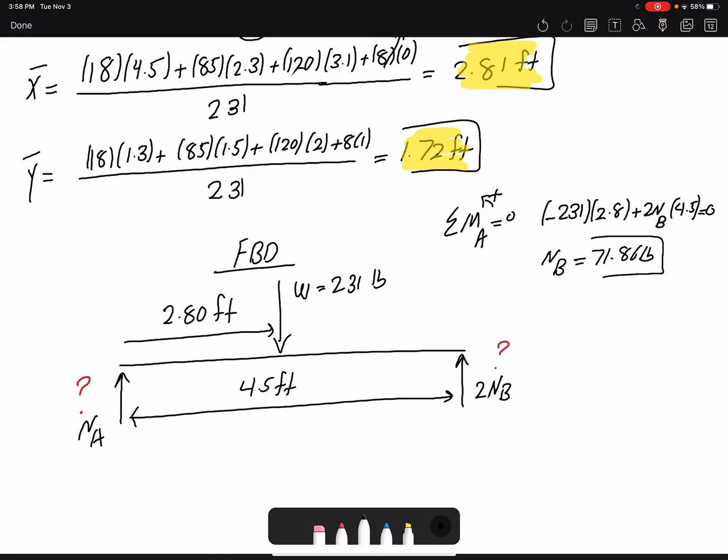If I write summation of forces along Y equals zero, I have NA negative 231 plus 2 NB equals zero. I found the value for NB 71.86, so the only unknown would be NA. I will find NA to be 87 pounds. So I found the reaction forces that the ground is acting on the wheels. There we go.